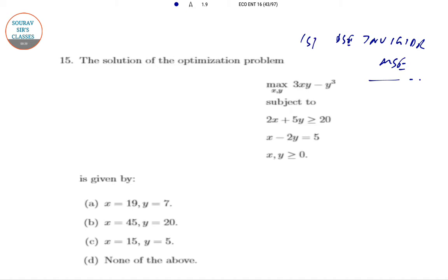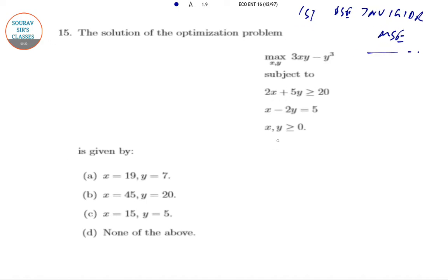So what is the question? They are asking about the solution of the optimization problem. It's a simple question. Here we will first try to draw these two diagrams. How to draw it? Like 2x plus 5y, put it equal to 20. So if you put x equal to 0, y equals 4. If you put y equal to 0, x equals 10.